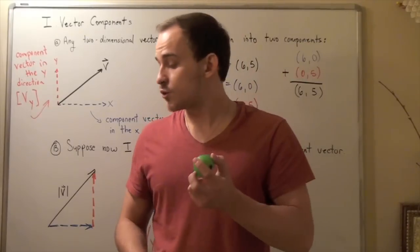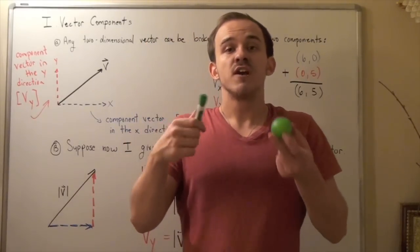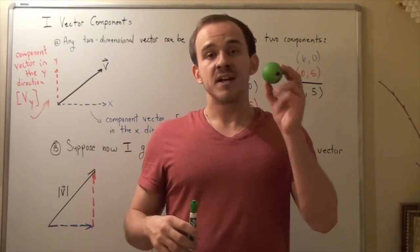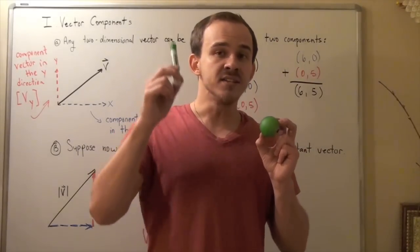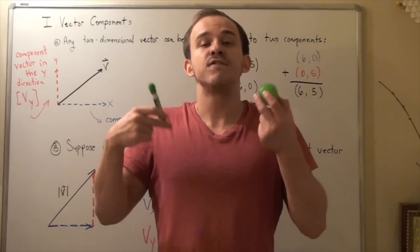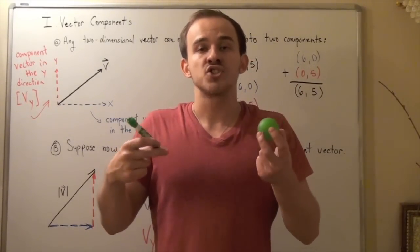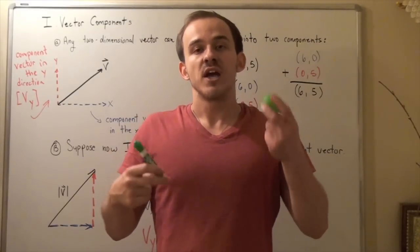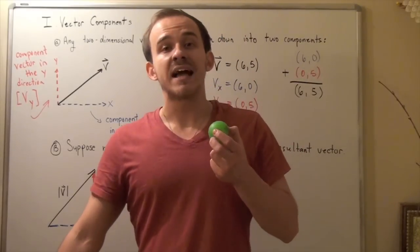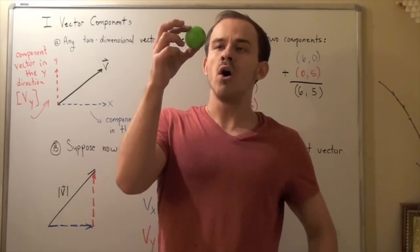I can even describe the way this ball interacts with this marker using force vectors. Because this has a mass and this has a mass, they will feel a force, a gravitational force, due to gravitational fields that both of these guys produce. And that's exactly why when I let go of my ball, this ball drops.